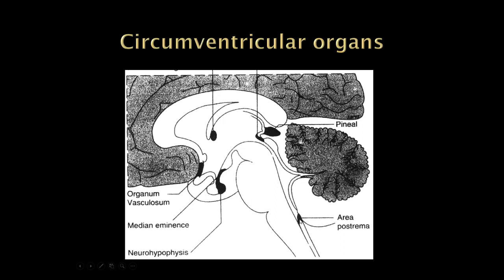All of the areas of the brain that lack a blood-brain barrier are called circumventricular organs. For now, just know the area postrema.